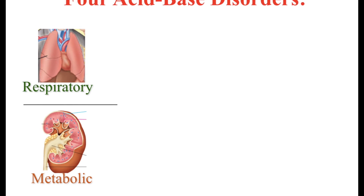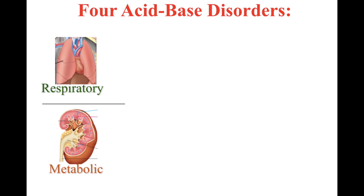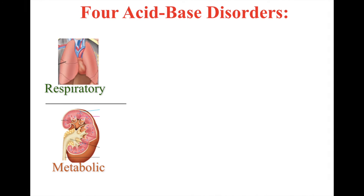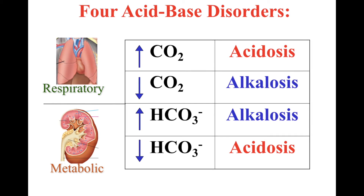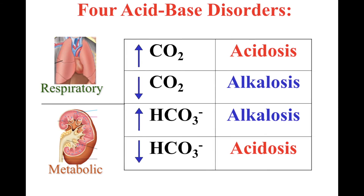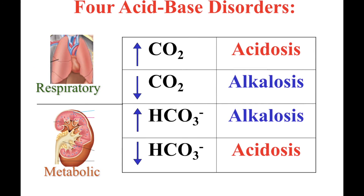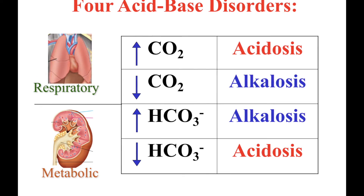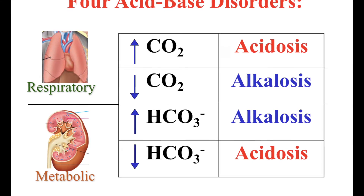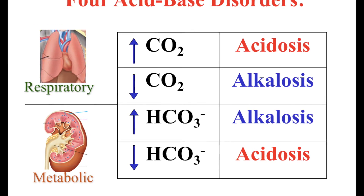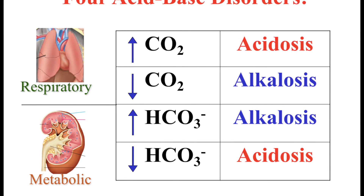There are four basic disorders that we see when looking at this balance in pH, which is regulated by the kidneys and the lungs. Acidosis is caused by either abnormally high concentrations of CO2 or very low concentrations of bicarbonate. The former is called respiratory acidosis and the latter is called metabolic acidosis. Alkalosis, which means that a system is basic, is caused by either low CO2 concentration or a high bicarbonate concentration. The former is called respiratory alkalosis and the latter is called metabolic alkalosis.